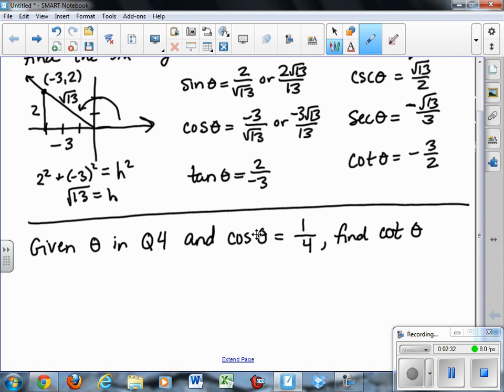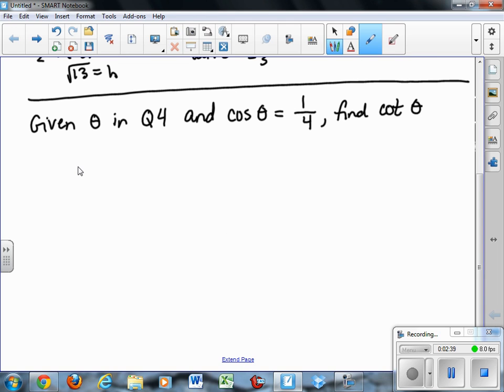Now, given theta in quadrant 4 and cosine theta equals 1/4, find cotangent of theta. So now we're given some information. First of all, the theta is in quadrant 4. So I'm going to draw a quadrant 4 angle. It says cosine is 1 over 4. That's adjacent over hypotenuse. So the hypotenuse is 4, and the adjacent side is 1. And I tried to draw that somewhat to scale. Now I just need to find the missing side.